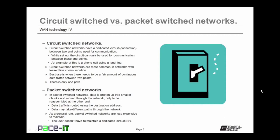Circuit-switched networks are most common in networks with leased line communication channels. They're best used when there needs to be a fair amount of continuous data traffic between the two endpoints, and with circuit-switched networks, there is only one path for the data to take. In packet-switched networks, data is broken up into smaller chunks and moved through the network, only to be reassembled at the other end. The data is routed using the destination address and may take different paths through the network. Packet-switched networks are generally less expensive to maintain because the user doesn't have to maintain a dedicated circuit 24/7 — they're only paying for what they're using.